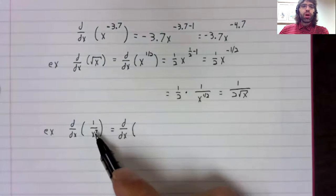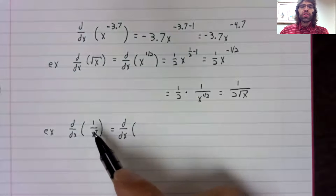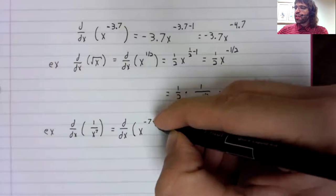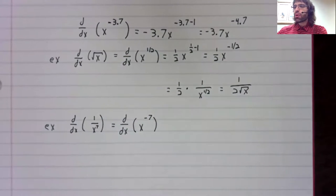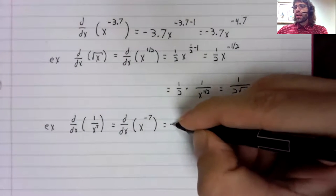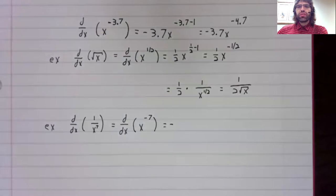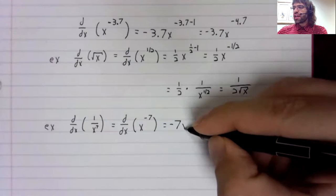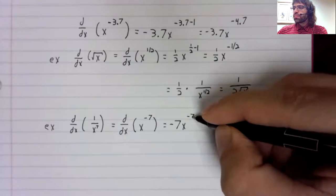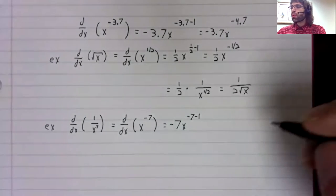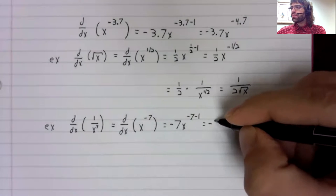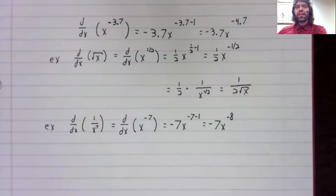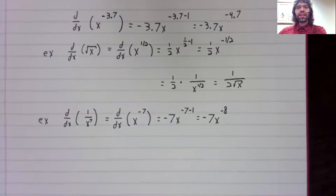And now this is a straightforward application. The negative seven comes down. In the power we subtract one. So negative seven times x to the negative eight.